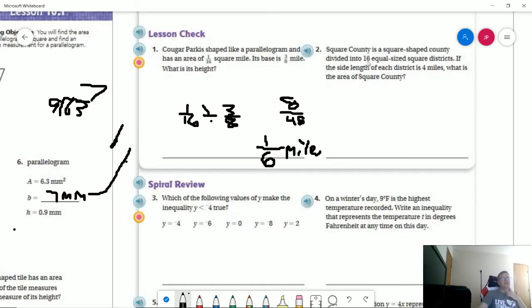And number 2, if we have 16 equal size square districts, and the side length of each district is 4 miles, what is the area? So in the section, what I suggested that you could do was to make a shape that is a square and put 16 smaller squares inside of it. And so if you did that, it would look a little bit something like this. And so I have 16 would-be squares inside.